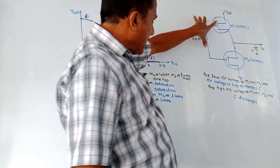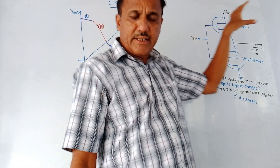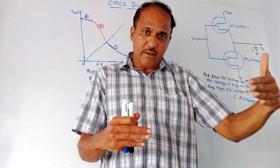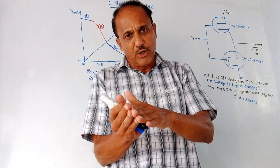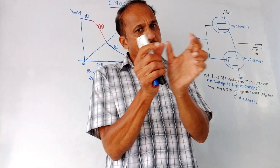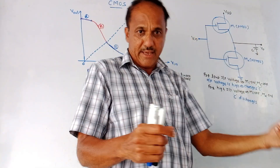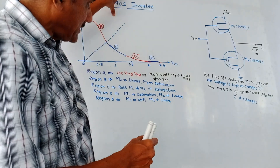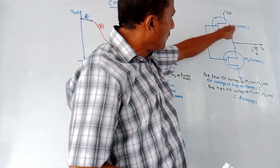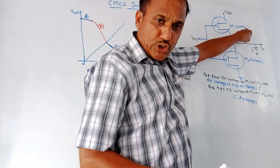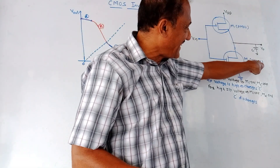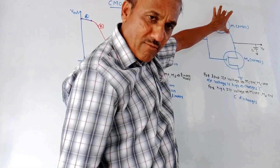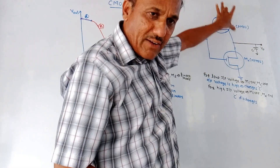This is the circuit diagram of CMOS inverter. As the name indicates, it is an inverter — if you apply high input, output will be low; if we apply low input, output will be high. This inverter action is generated using CMOS. We are connecting two MOSFETs: M1, which is a P MOSFET, and M2, which is an N MOSFET, connected one after the other.